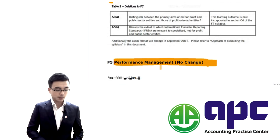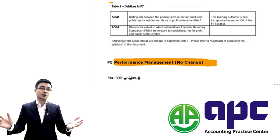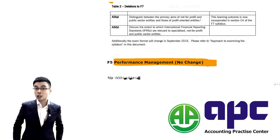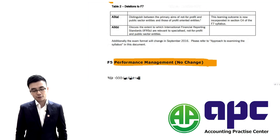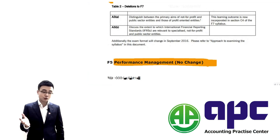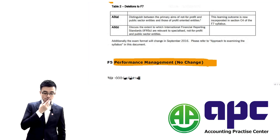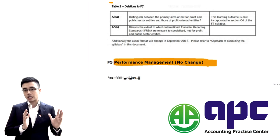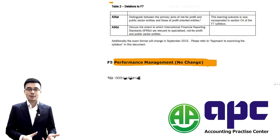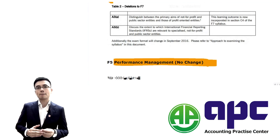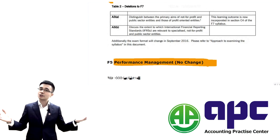For F5 Performance Management, there will be no changes in the current syllabus — that's good news. From my perspective, F5 has very low pass rates among the F-level papers. Quite a lot of students have commented that F5 is the most difficult paper at the F level. F5 is all about management accounting, and even if you have an exemption from F5, you will see all of those issues popping up again when you study P3 Business Analysis later.